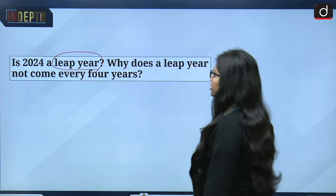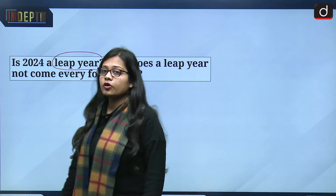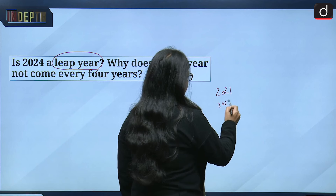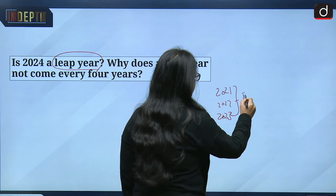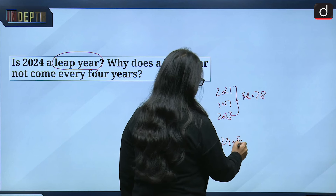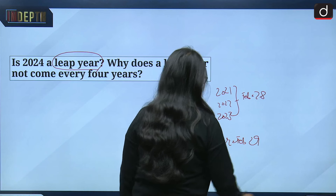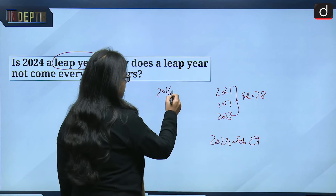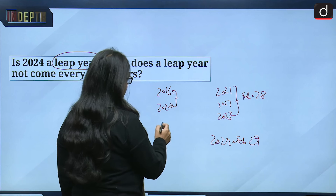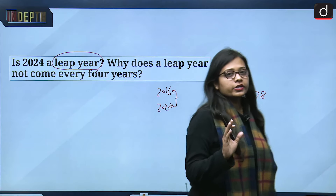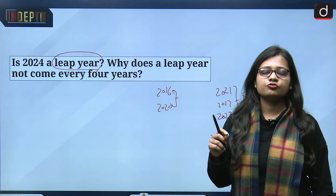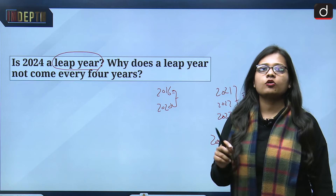Why does a leap year not come every four years? In the years 2021, 2022, and 2023, February had 28 days, but in 2024 February has 29 days. The same was the case in 2016 and 2020, when February had 29 days while all other years it had only 28 days. The year in which February has one extra day — 29 days — is called a leap year.